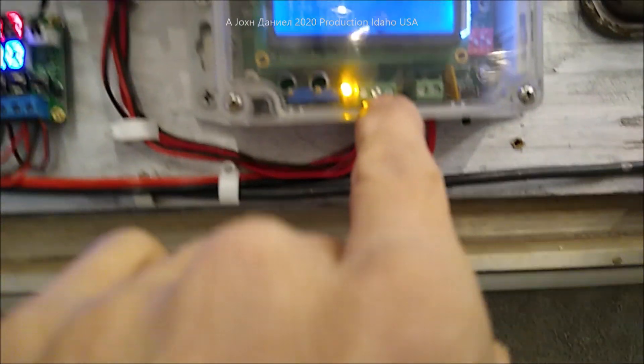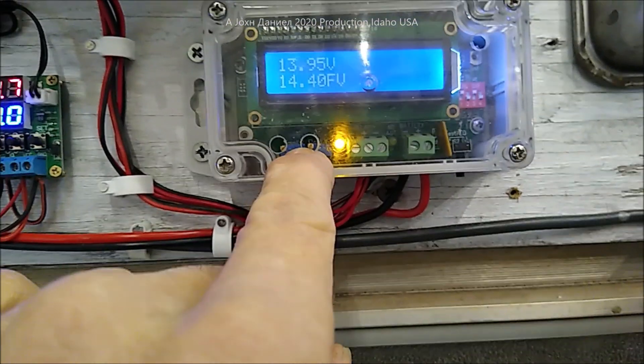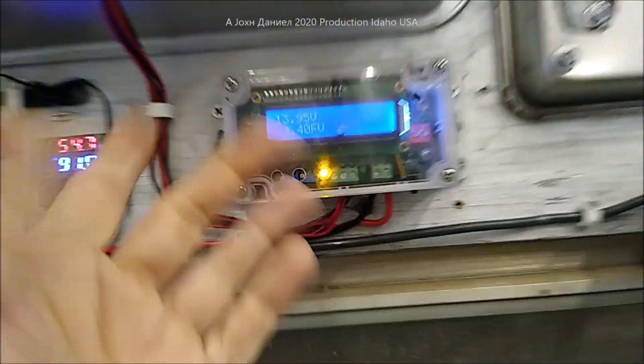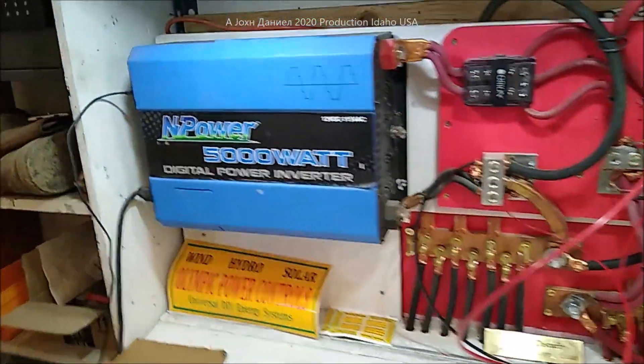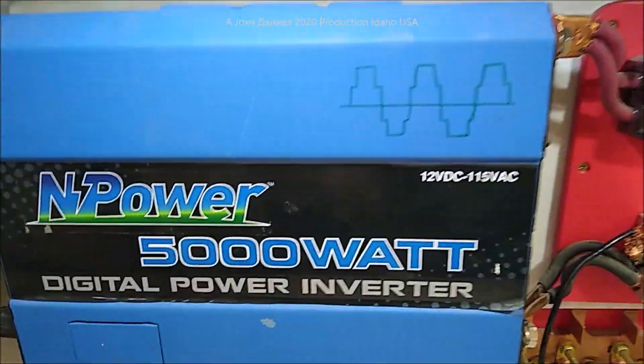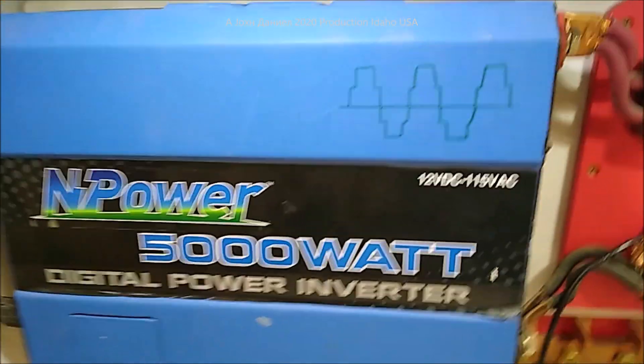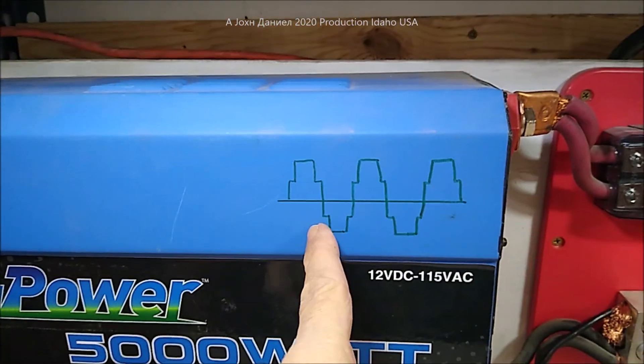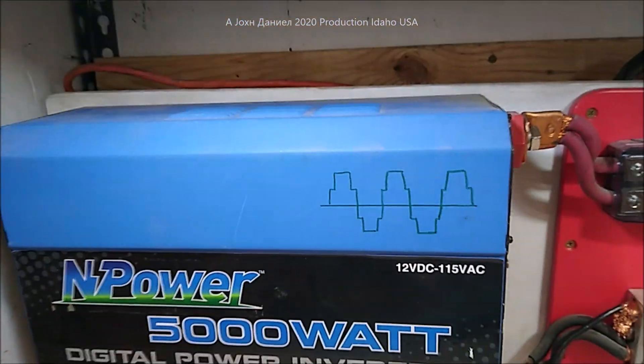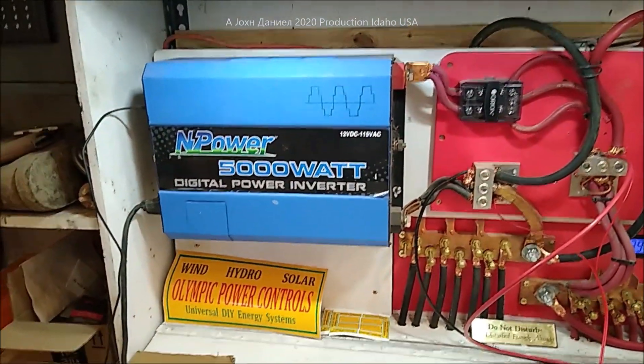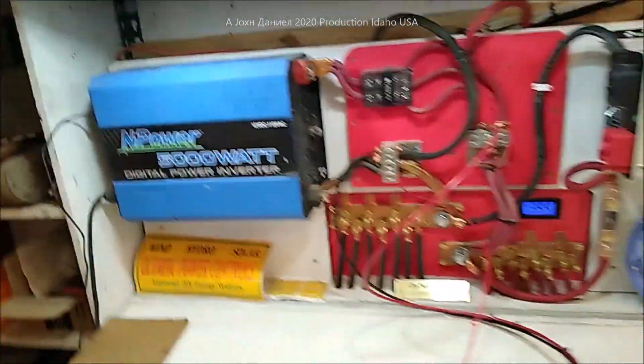Anytime that you want to bulk charge your batteries, or you want to service charge or equalize your batteries, you just come in here and you change it to where they'll do it at 15 volts. But be sure when you equalize batteries that if you have an inverter, turn them off so that you don't overvolt them.